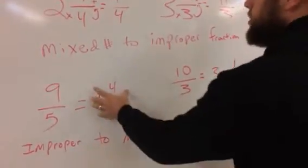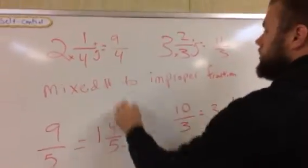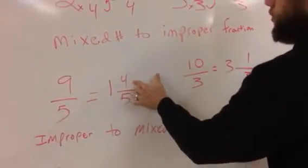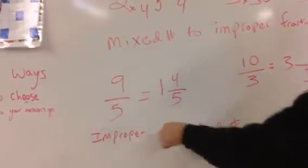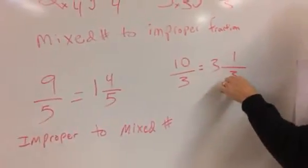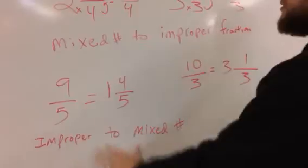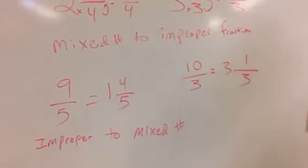Now, in case I'm wrong, we can apply the same move we did up here and see if we're right. 1 times 5 is 5 plus 4 is 9 fifths. Over here, 3 times 3 is 9 plus 1 is 10 thirds. So we can go backwards and forwards all day long. Thanks for watching.